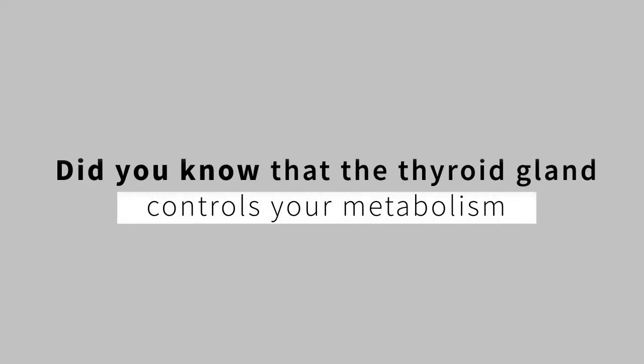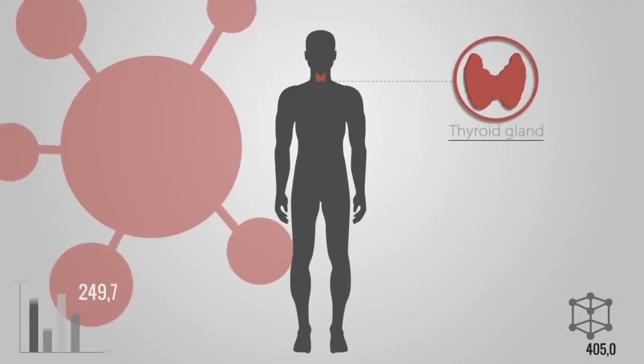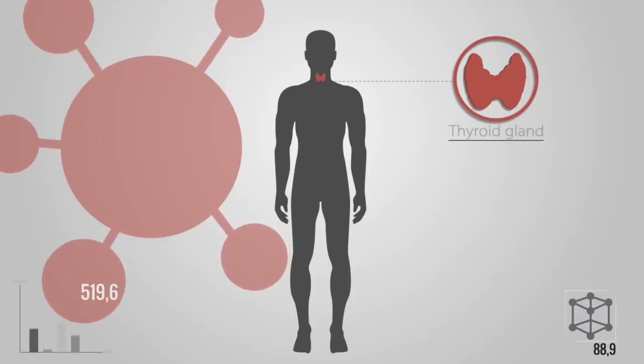Did you know that the thyroid gland controls your metabolism? The thyroid is a small gland located at the front of the neck, right next to the windpipe.